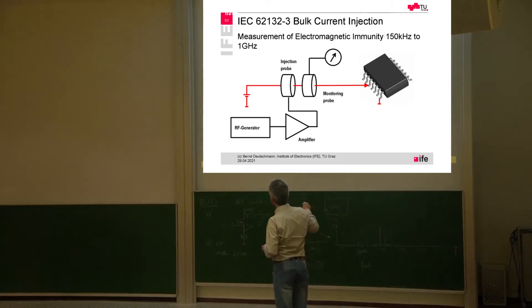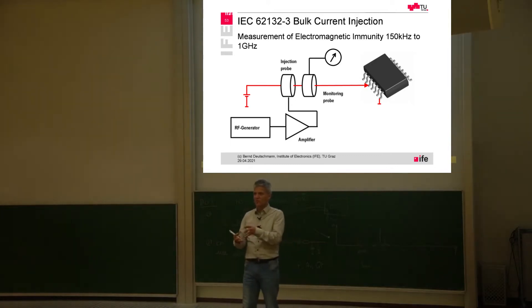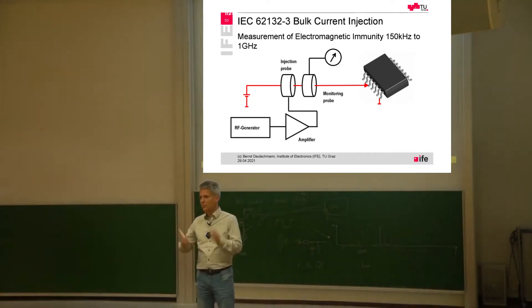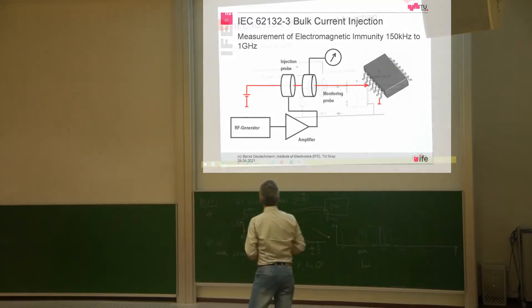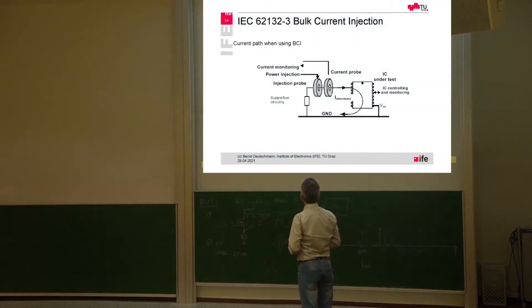And the noise signal is again generated by an RF generator amplified by a power amplifier, and very often we have to use also a monitoring probe because in the standard it's defined that the noise current that should flow in this power supply line should not exceed, for example, 50 milliamp or 100 milliamp or whatever is defined. This is the basic principle.